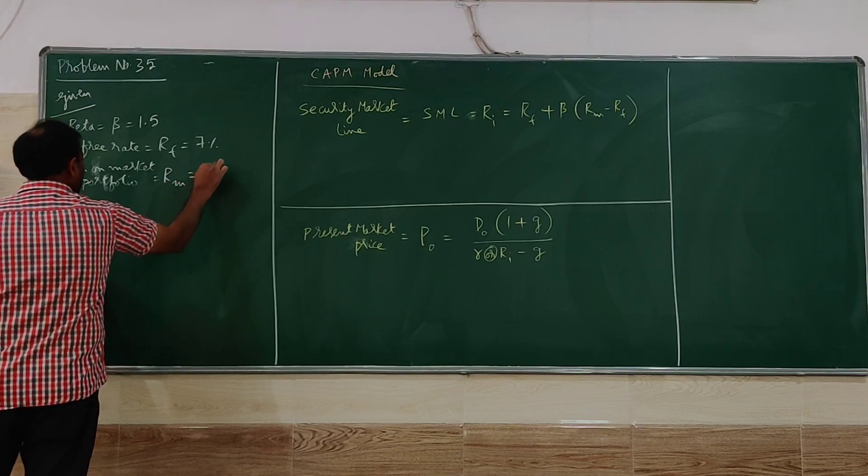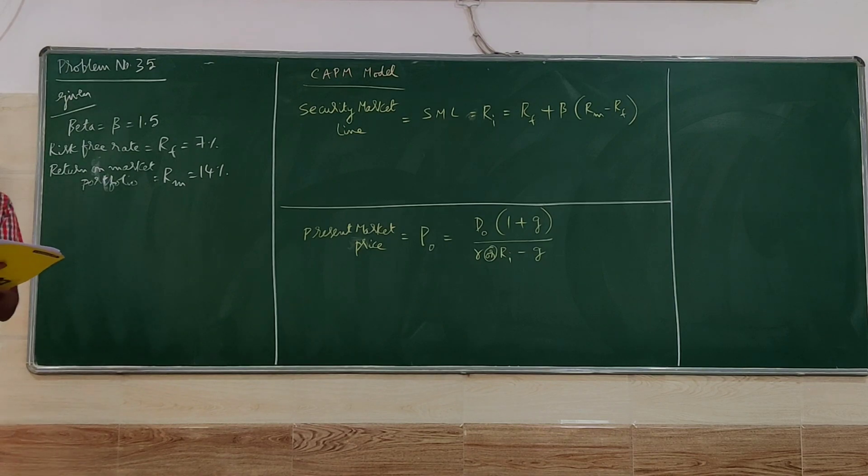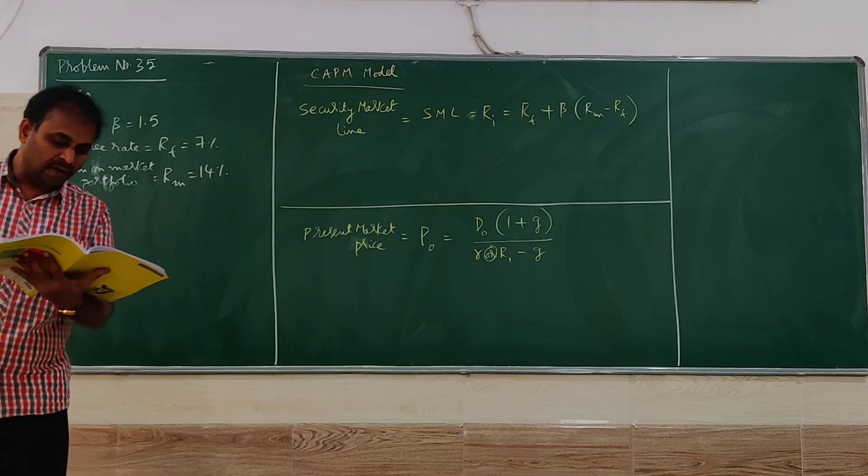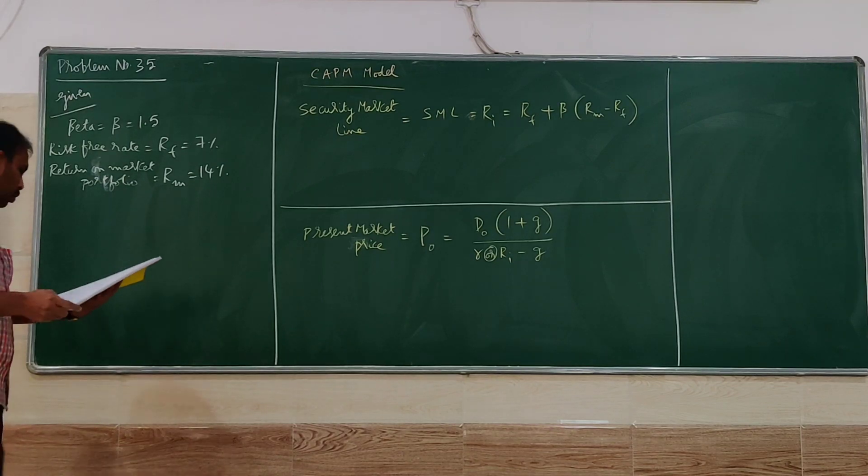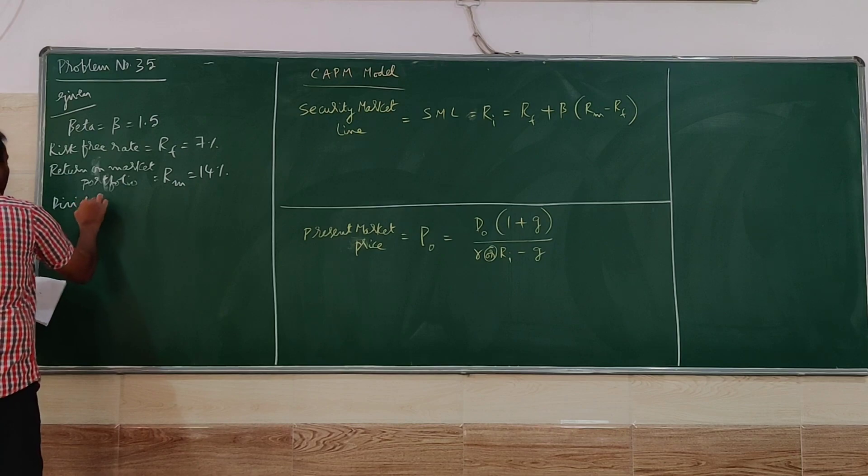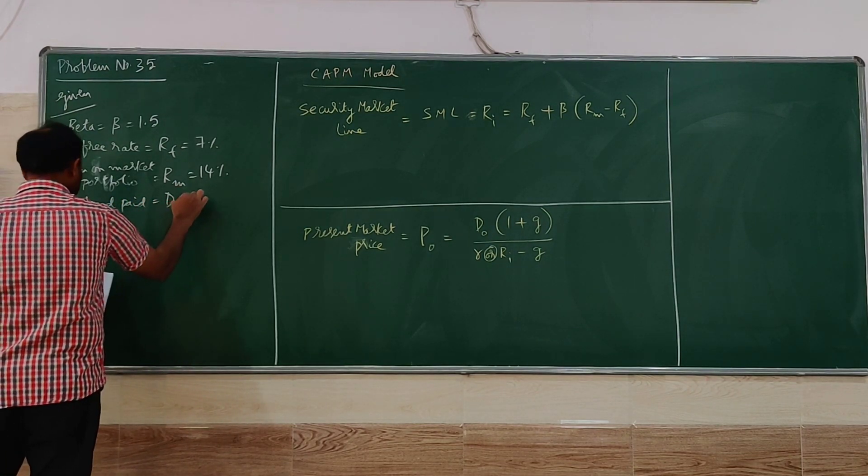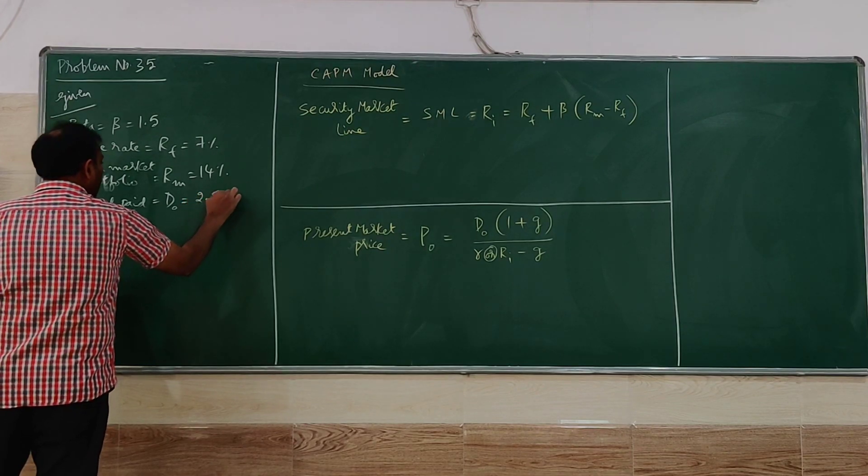Next paragraph you have, the company presently pays a dividend of Rs. 2.50. Dividend paid, we call it as D0, Rs. 2.50.